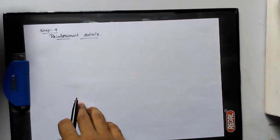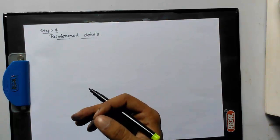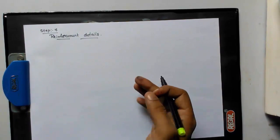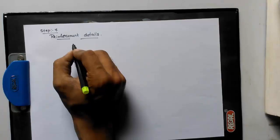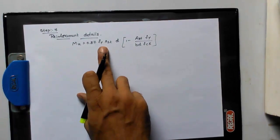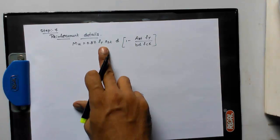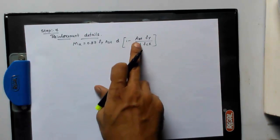Our next step is reinforcement details. We need to find out how much reinforcement we should provide for this dogleg steel design. For that, we have the formula mu is equal to - we have the mu formula in IS 456, page number I think 92 or something.